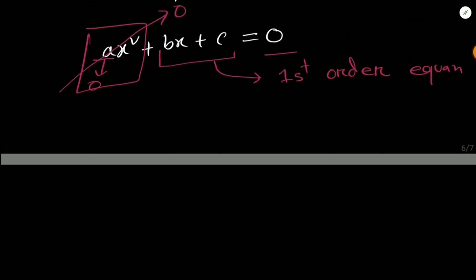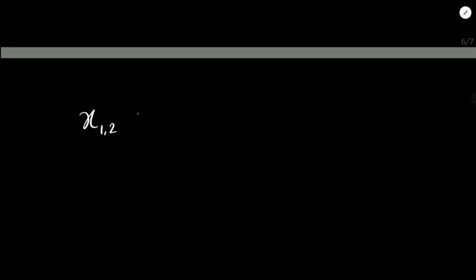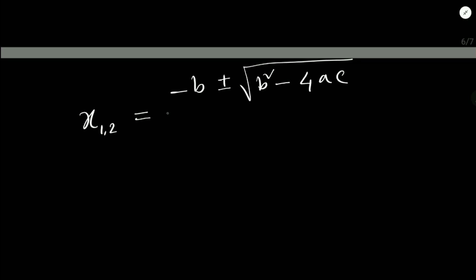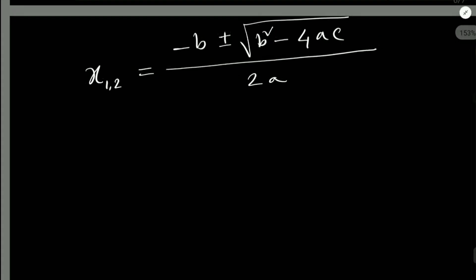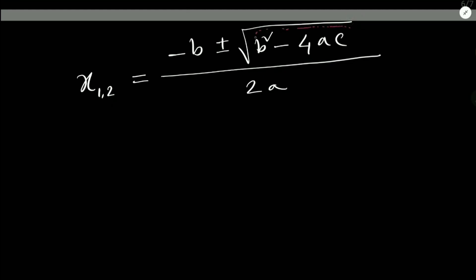There is a formula to find the solutions. The formula is: x1, x2 = (-b ± √(b² - 4ac)) / 2a. This formula is very important — I suggest you memorize and understand it. The part under the square root, b² - 4ac, is called the discriminant, or delta. We write: Δ = b² - 4ac.